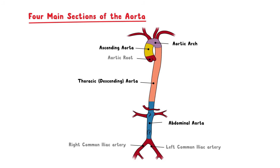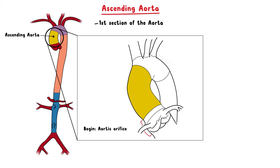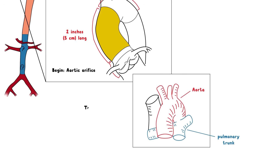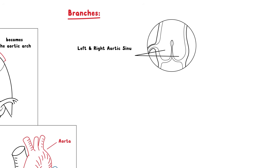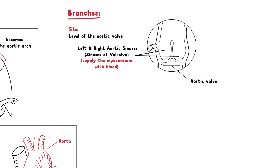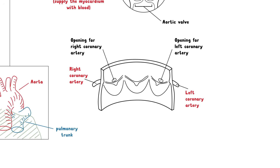The first section of the aorta is the ascending aorta. It arises from the aortic orifice and ascends to become the aortic arch. It is approximately 2 inches long and travels with the pulmonary trunk within the pericardial sheath. The left and right aortic sinuses, also known as the sinuses of Valsalva, are dilations in the ascending aorta located at the level of the aortic valve. These sinuses give rise to the left and right coronary arteries that supply the muscle of the heart itself, the myocardium.